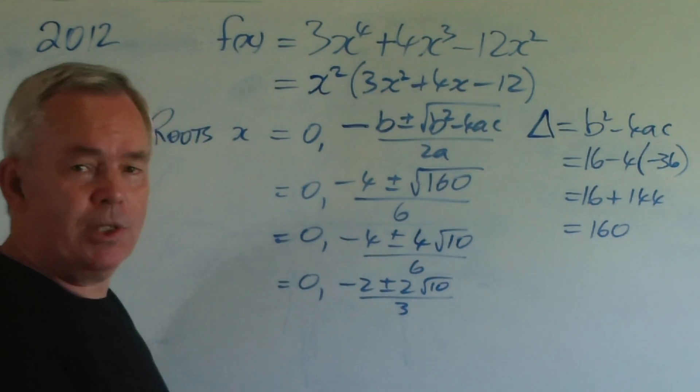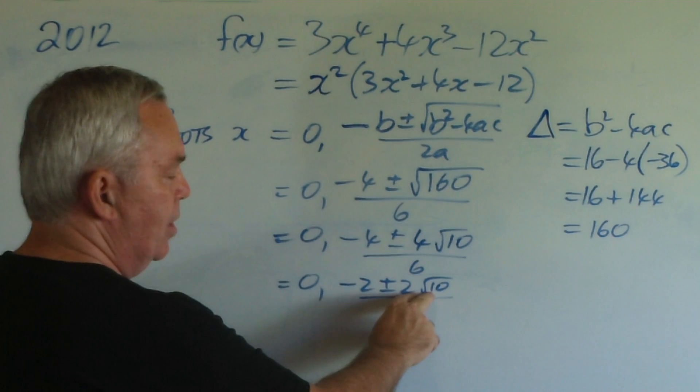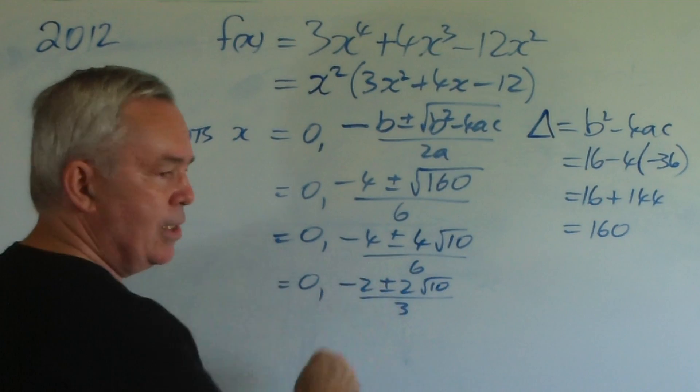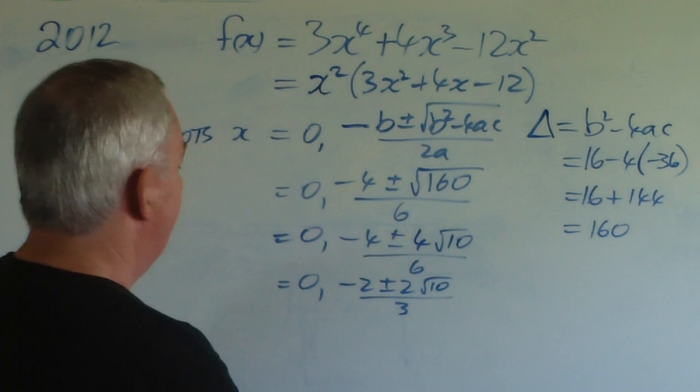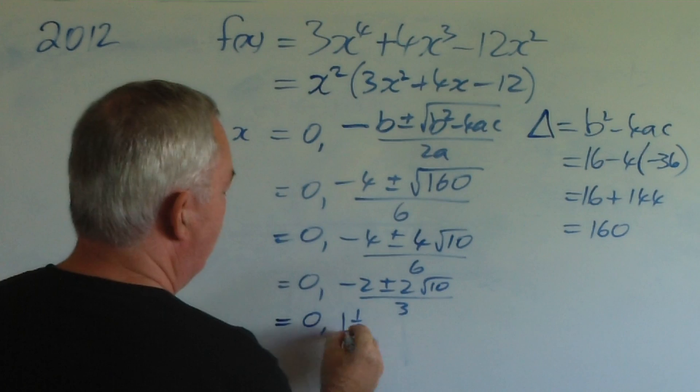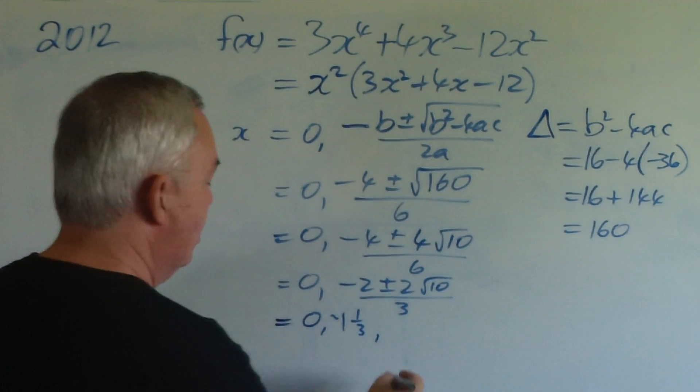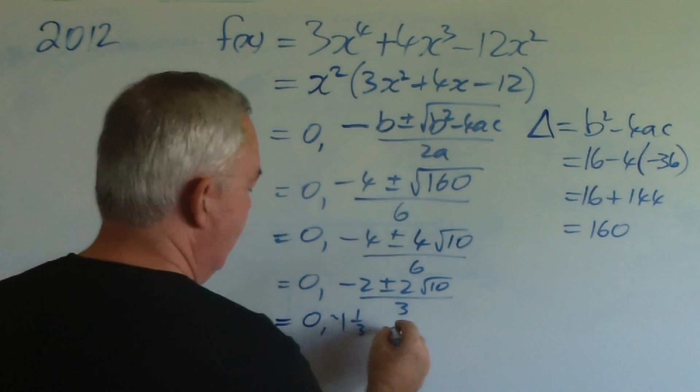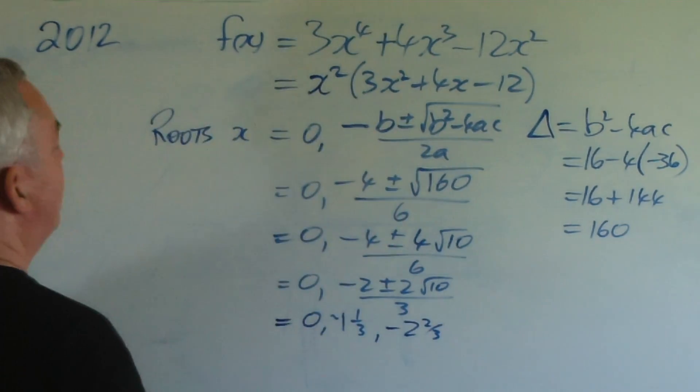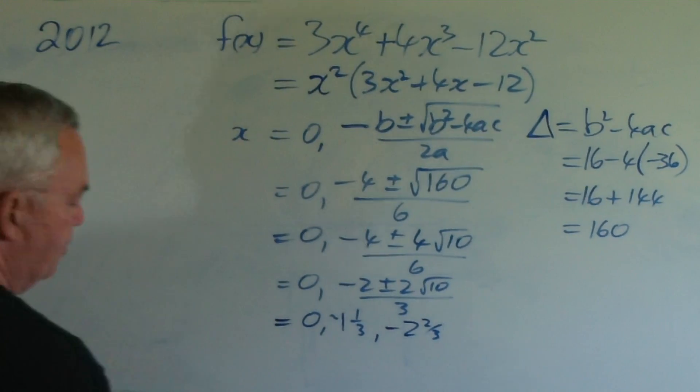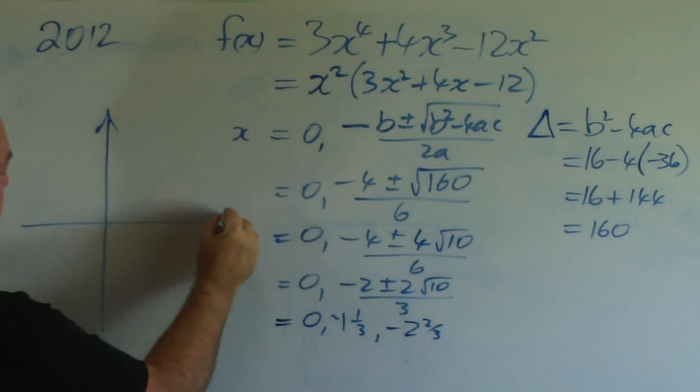But, if we were to sketch this, what's the value? Well, root 10 is just over 3. It's just over the square root of 9. So, we've got something just over 6 here. So, minus 2 plus 6 and a bit is 4 and a bit over 3. So, it's just over 1 and a third. So, I'll do some approximations here. And the other one's going to be minus 2 minus 6 and a bit is minus 8 and a bit. So, it's just under minus 3. So, minus 2 and 2 thirds. I have not left room for graphing. I'll do it over here. This is the last of the exam questions I'm going to discuss in this video.